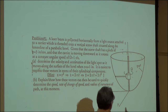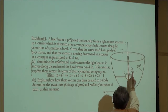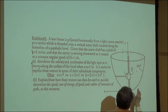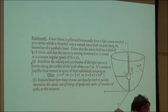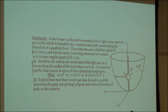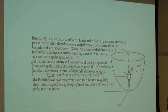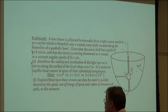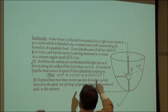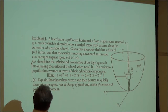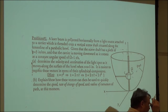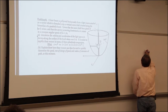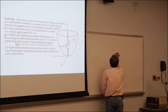A laser beam is projected horizontally from a light source attached to a carrier threaded onto a vertical screw shaft along the center line of the bowl. The carrier rotates and screws downward, so the laser beam traces a spiraling path on the inside surface of the bowl. Let's organize all this information carefully.